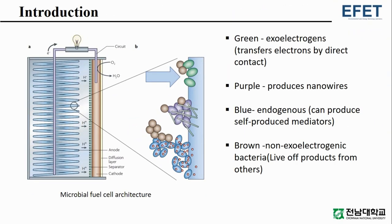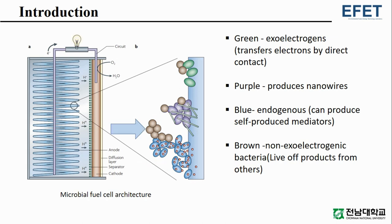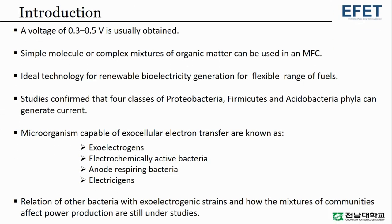The green cells represent exoelectrogens that are capable of transferring electrons by direct contact. Purple cells can produce nanowires. Blue cells are endogenous and can produce self-produced mediators. Brown cells are called non-exoelectrogenic bacteria that live off products produced from other microorganisms.